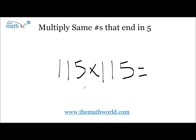The last example we're going to go over is a 3-digit by a 3-digit, and I did want to point this out because it does work with any number — it doesn't have to be a 2-digit number. So in this example, 115 by 115 still ends in 5, so we're going to write down 25. And then we have 11 here, so 11 times the next largest number, which is 12.